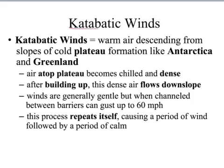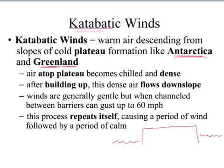The katabatic winds don't have to do with mountains — they have to do with a plateau. Two examples of plateaus where katabatic winds occur are Greenland and Antarctica. Over time, a buildup of high pressure develops on top of the plateau. That blob of high pressure then gets on the move and flows down off the plateau — this movement of air is the katabatic wind, and it will repeat itself.